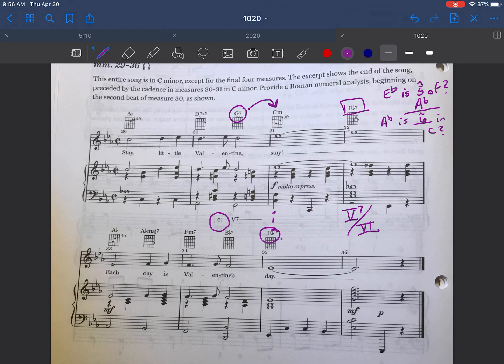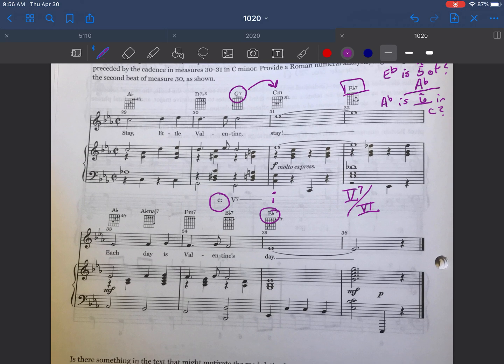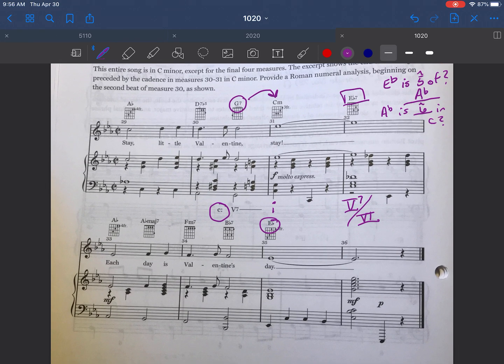So just to recap, I encountered an E flat 7 chord. E flat 7 is a dominant 7th chord which only happens on scale degree 5. E flat is not 5 of C. So I know this has to be a secondary dominant chord. E flat is 5 of A flat. So it's 5 7 of A flat. A flat is 6 in C. So it is a 5 7 of 6.